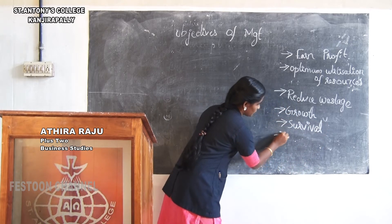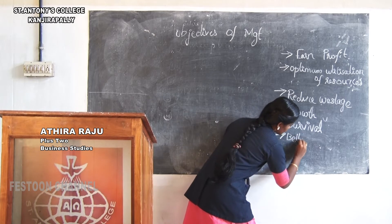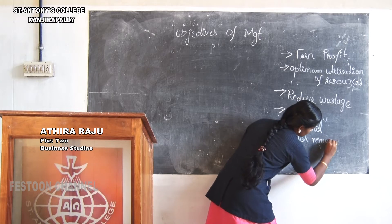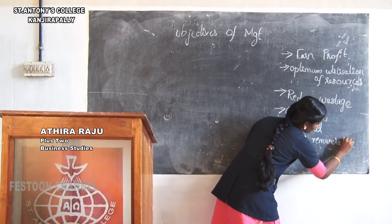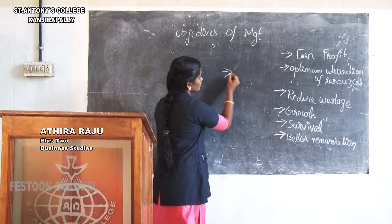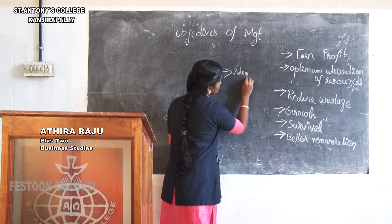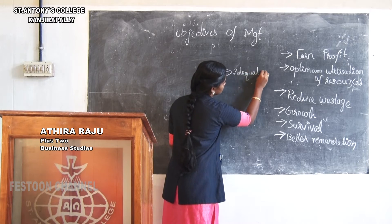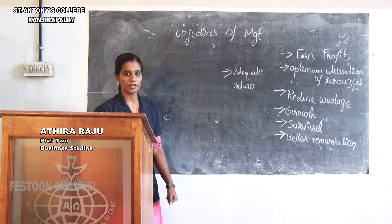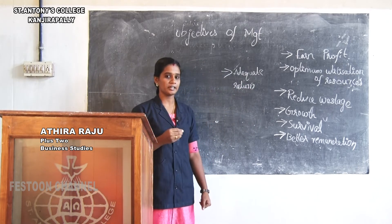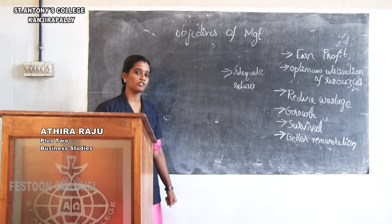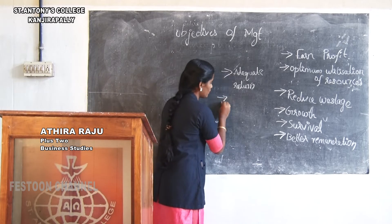The main objective is better remuneration to employees. Better remuneration to employees. That is why adequate return to shareholders. Adequate return to shareholders. That is why the customer needs good quality product at a reasonable price. That is the main objective of the business.